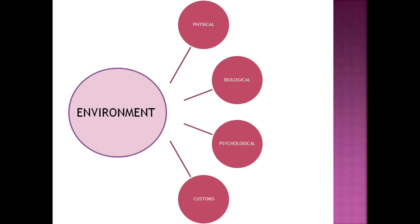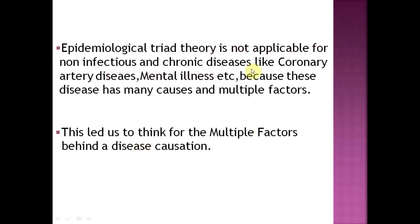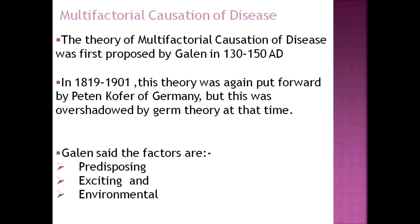All three factors — agent, host, and environment — have a role in producing disease; the equilibrium between them must be disrupted for disease to occur. This model explains why some persons don't suffer disease even when exposed to pathogens. However, it is not applicable for non-infectious and chronic diseases like coronary disease or mental illness, where multiple factors are involved, leading to the concept of multifactorial causation.